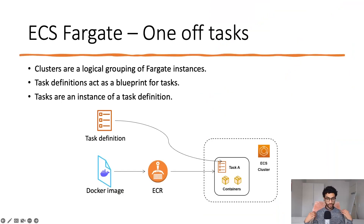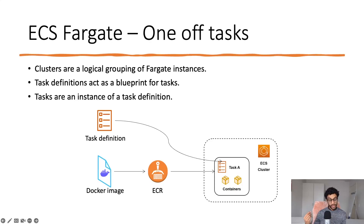So for ECS Fargate, we start off with something called one-off tasks. These are simply batch jobs that need to be run maybe once. This could be something like an image resizing function or some computation that needs to be done on a series of images or a series of numerical data.